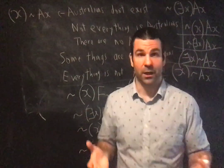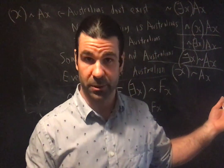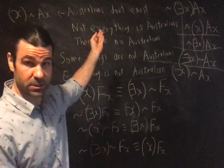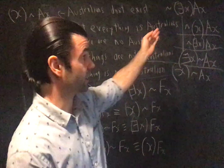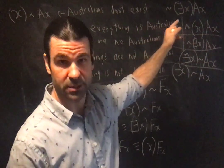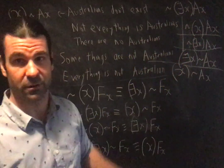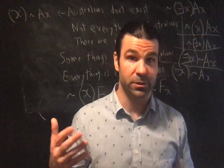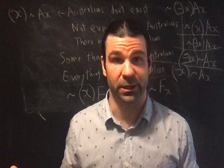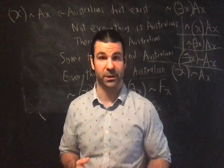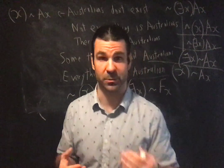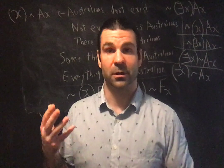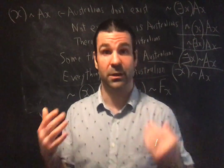Every negated existential statement is equivalent to a universal statement. So if I say 'Australians don't exist,' we translate that as: it's not the case that there exists an x such that x is Australian. You should hear that when I say that, it's equivalent to saying everything is not Australian. The first step is just recognising the equivalence between these two statements.